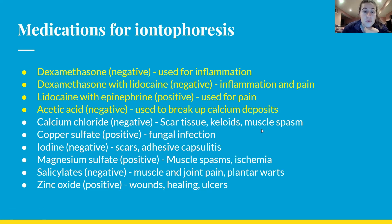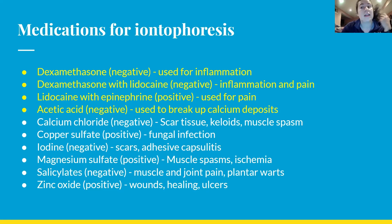Other medications: calcium chloride is negative, used for scar tissue, keloids, and muscle spasms. Copper sulfate is positive, used for fungal infections. Iodine is negative, used for scars or adhesive capsulitis. Magnesium sulfate is positive, used for muscle spasms and ischemia. Salicylate is negative, used for muscle and joint pain or plantar warts. Zinc oxide, positive, is important for wounds, healing, and ulcers — especially relevant in wound care around ulcer sites.